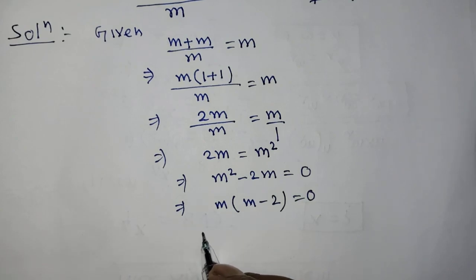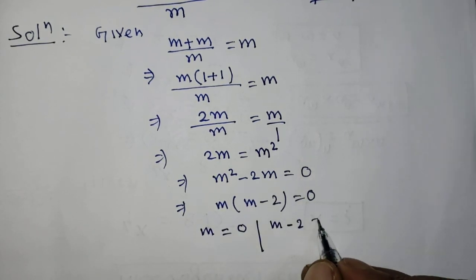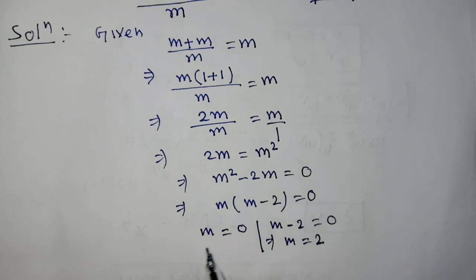According to the zero product rule, we can write from this equation m equals 0 and m minus 2 equals 0. From the second equation, m equals 2.